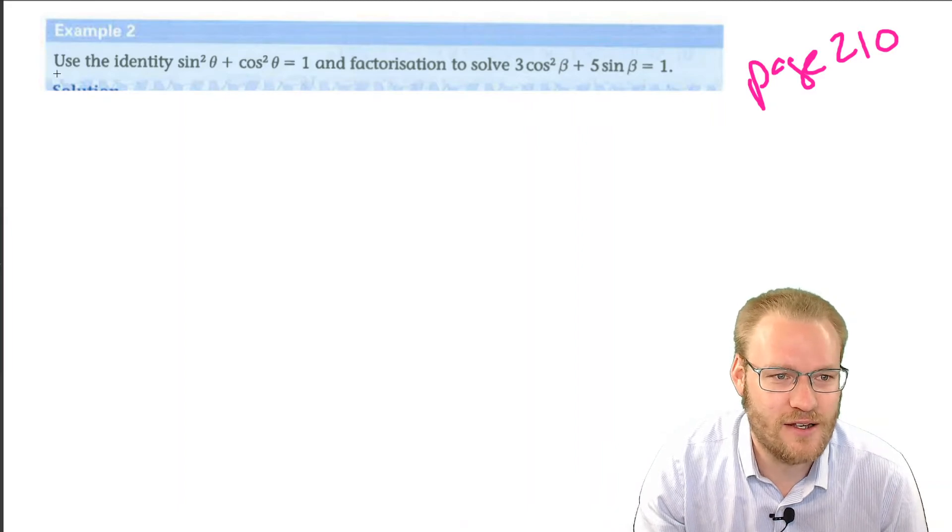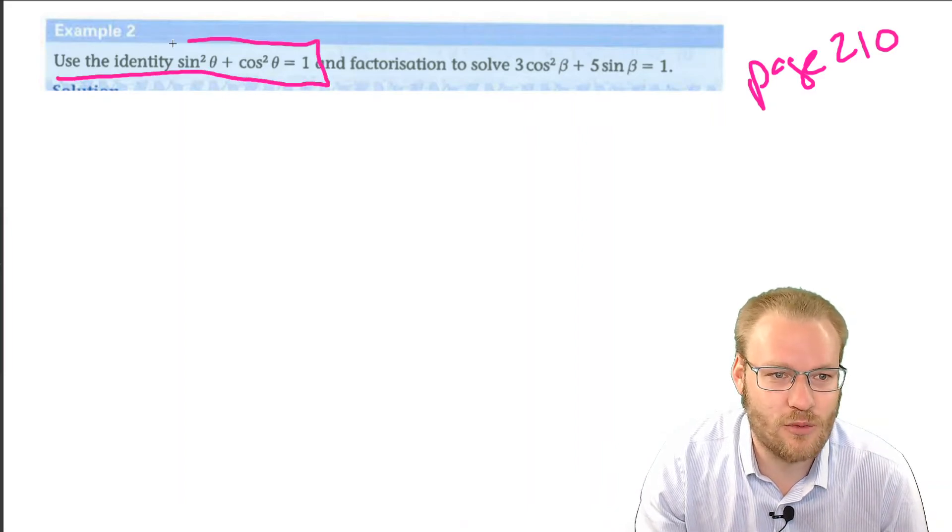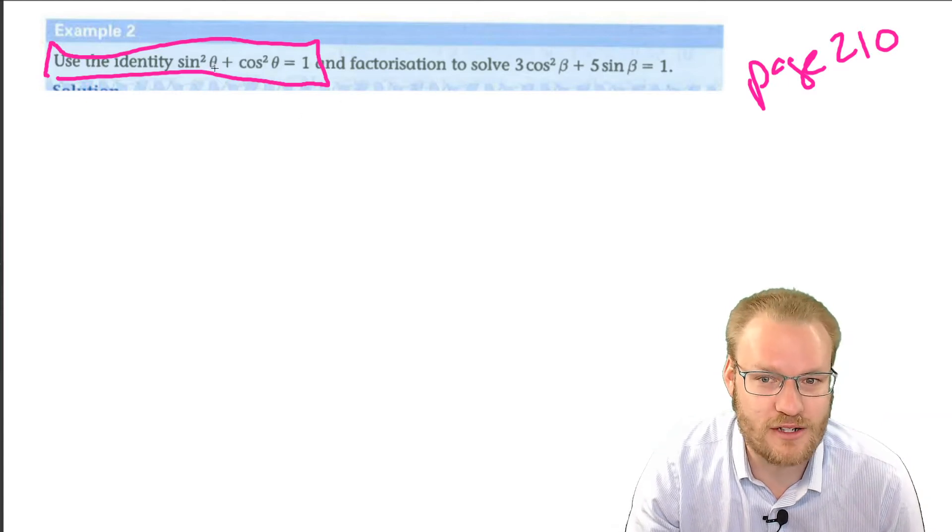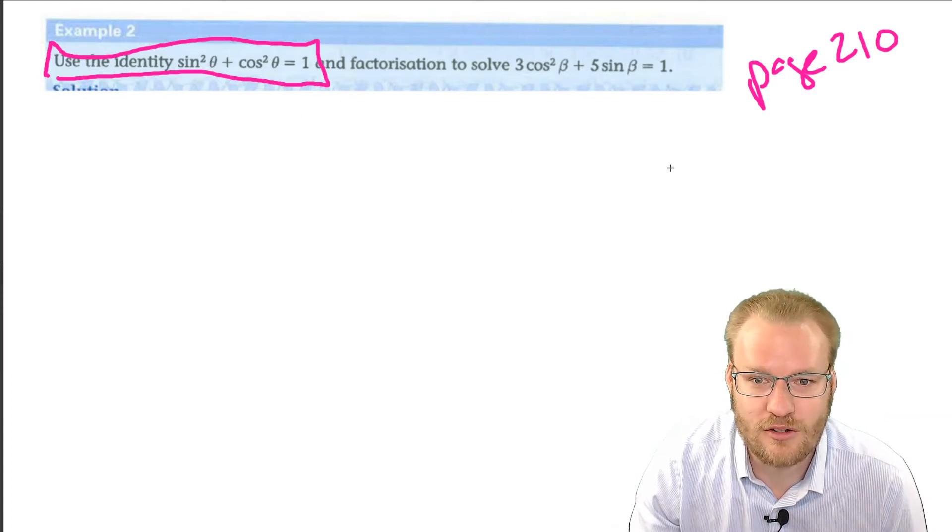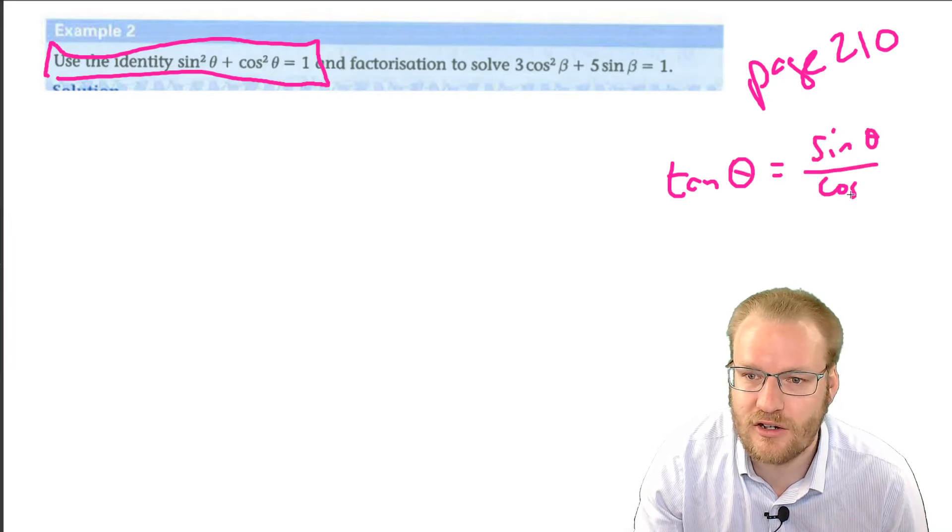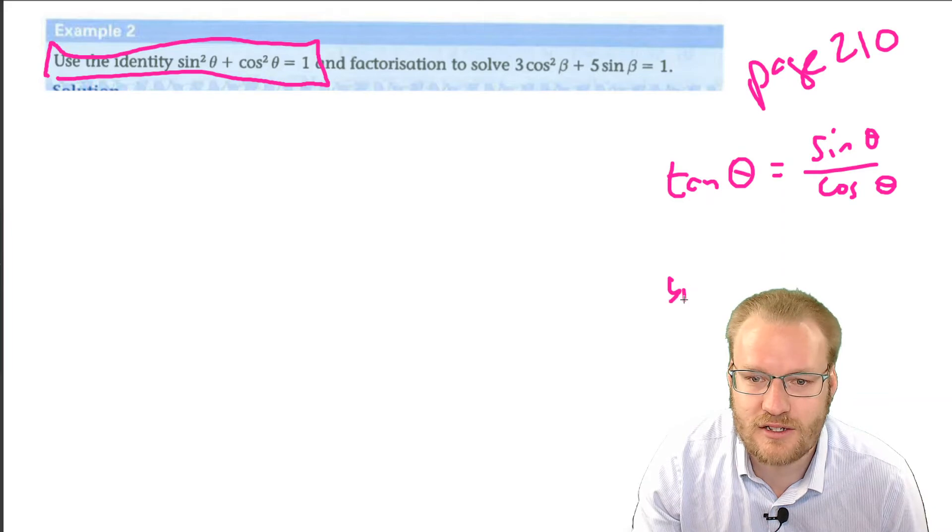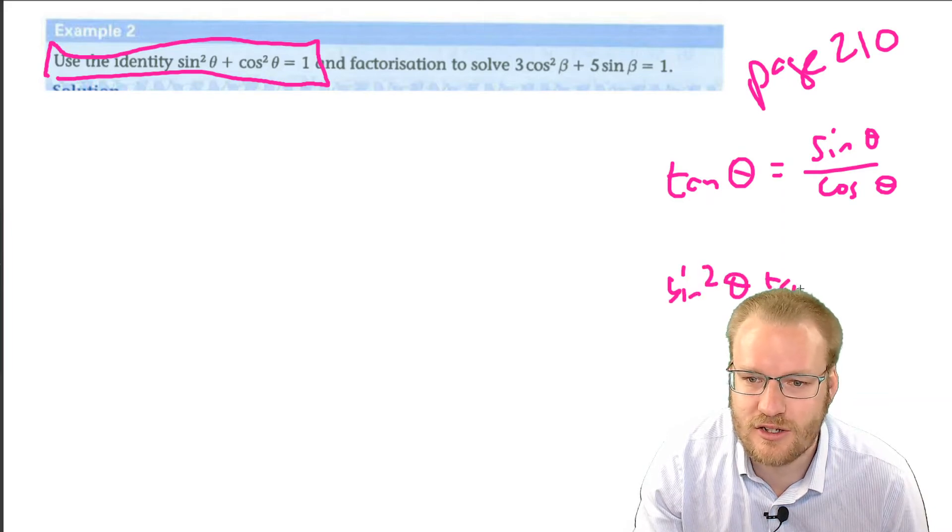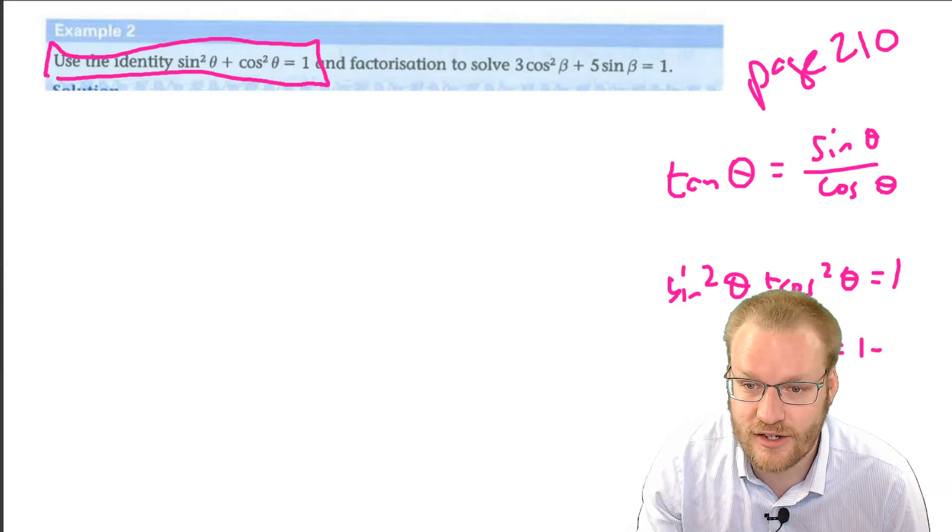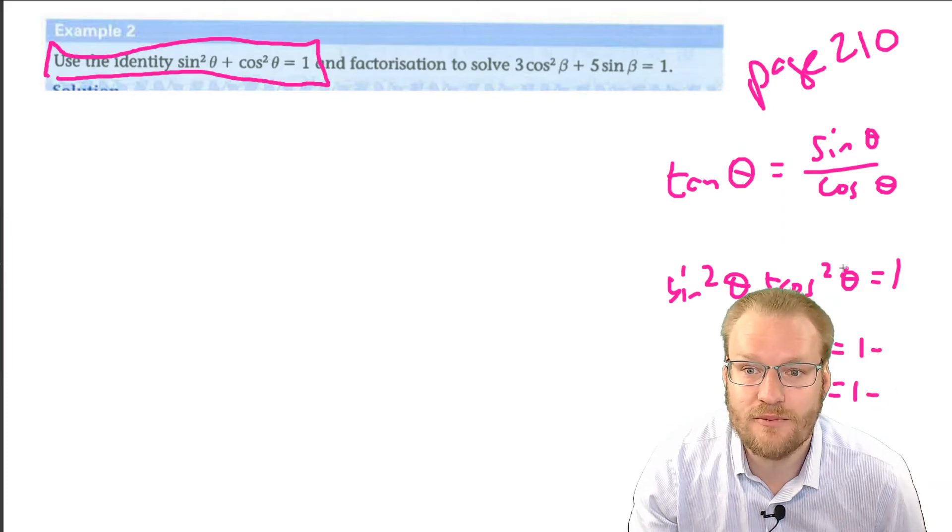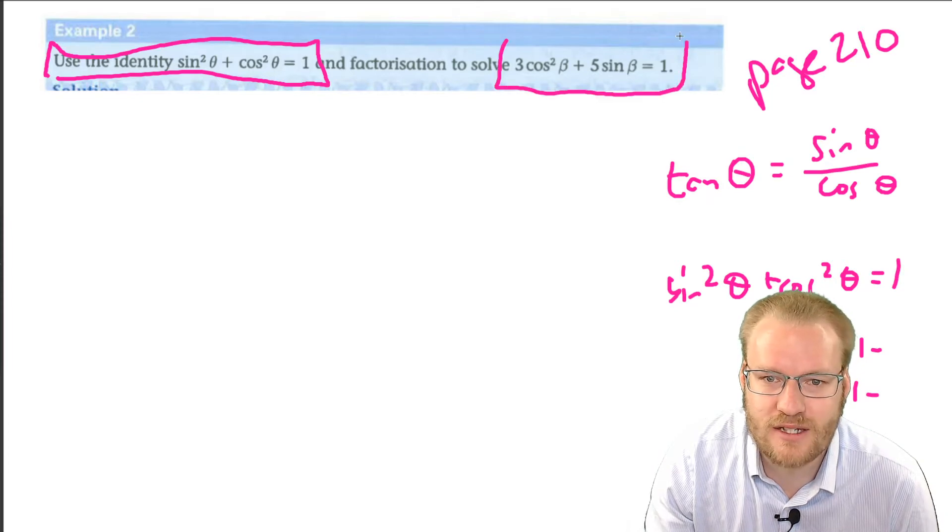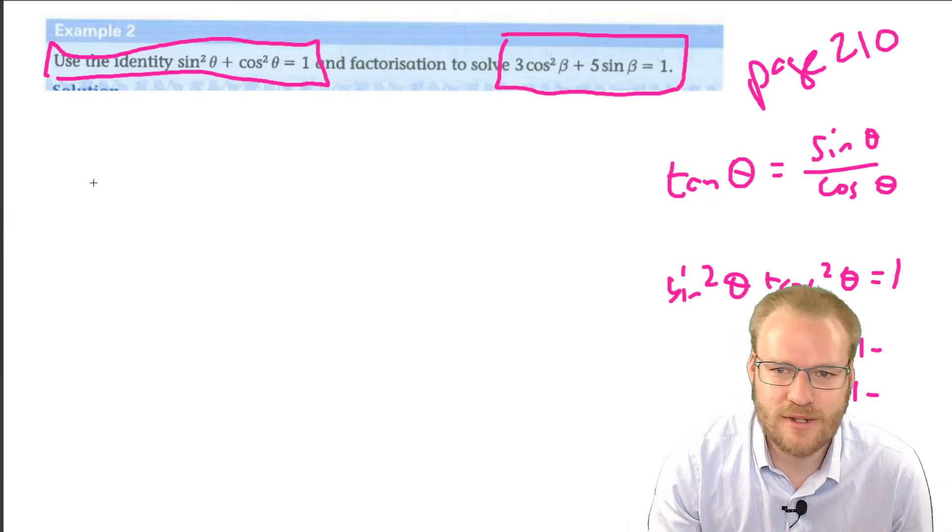Use the identity. Like example one, you won't be told which identity to use. You need to know that tan θ equals sin θ over cos θ, and you know that sin²θ + cos²θ = 1, plus those other two variations. So you're given 3cos²β + 5sinβ = 1.